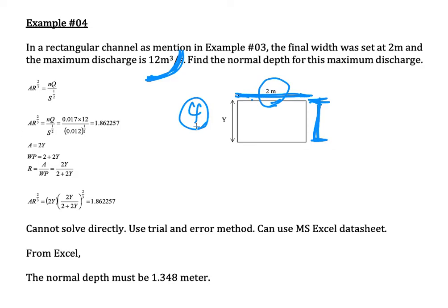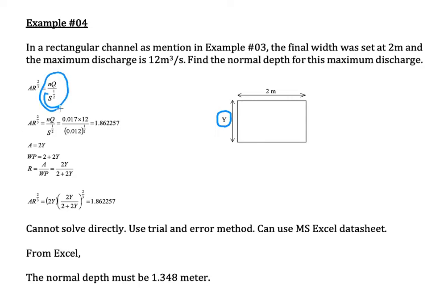With depth y as the one unknown, the flow properties are: n equals 0.017, Q equals 12 cubic meters per second, and S is given from before. The right-hand side evaluates to 1.862257. The cross-sectional area A equals 2y, the wetted perimeter equals 2 plus 2y, and the hydraulic radius equals 2y over (2 plus 2y).